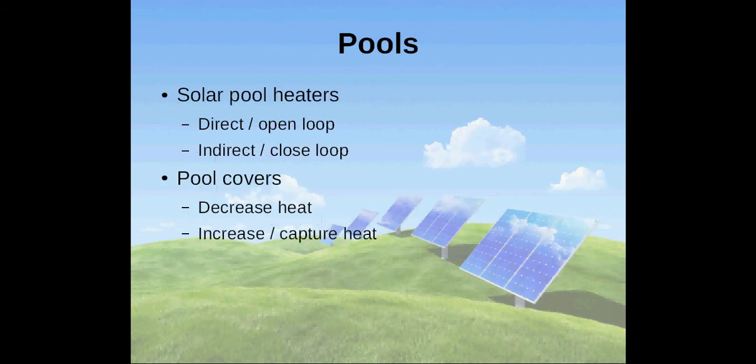Solar pool heaters can be mounted on the rooftop where the solar thermal collectors can collect sufficient sunlight. Swimming pools can be heated in two ways: direct or open loop system, and indirect or closed loop system. In the open loop system, the water is circulated through a hot water storage tank where the collectors heat the potable water.